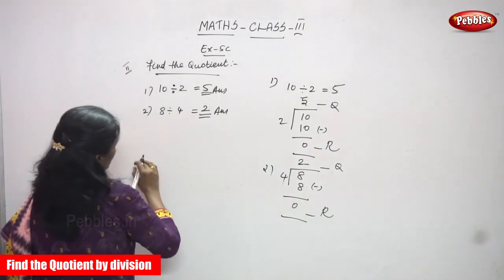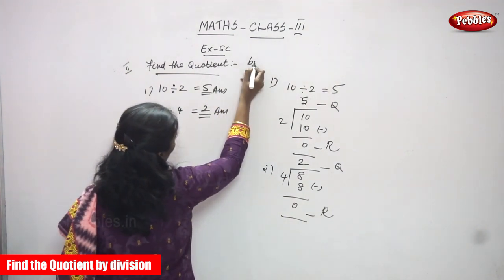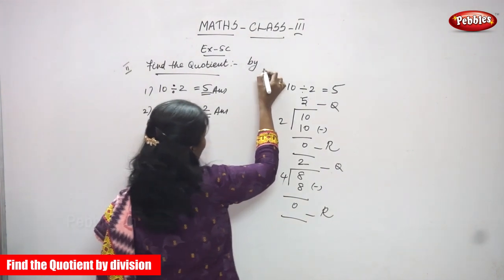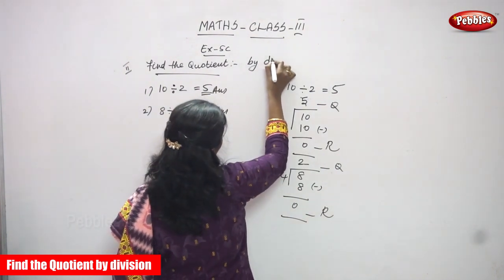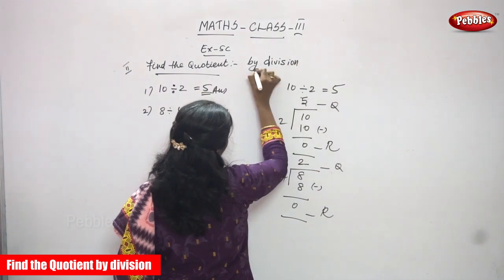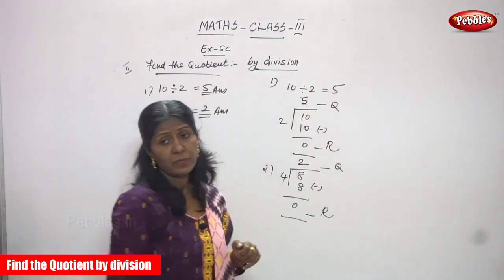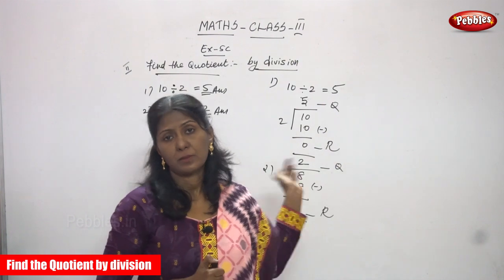What is this? It's finding the quotient by division, not repeated subtraction. By division. It's the division method. That's it.